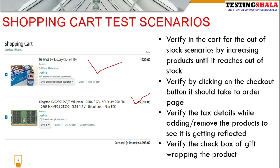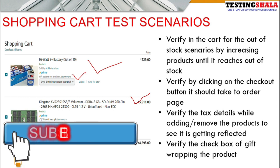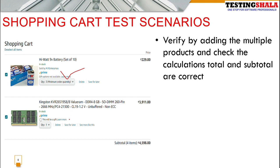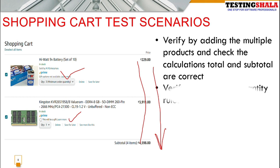There is also a gift option checkbox — you should verify whether it can be selected properly or not. When increasing or decreasing product quantities, all calculations, totals, and subtotals should be calculated correctly without any mistakes, and those should also be validated.